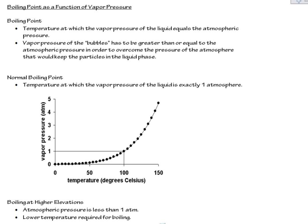But now we're going to look at how vapor pressure affects boiling. So it says here that the boiling point is the temperature at which the vapor pressure of the liquid equals the atmospheric pressure.